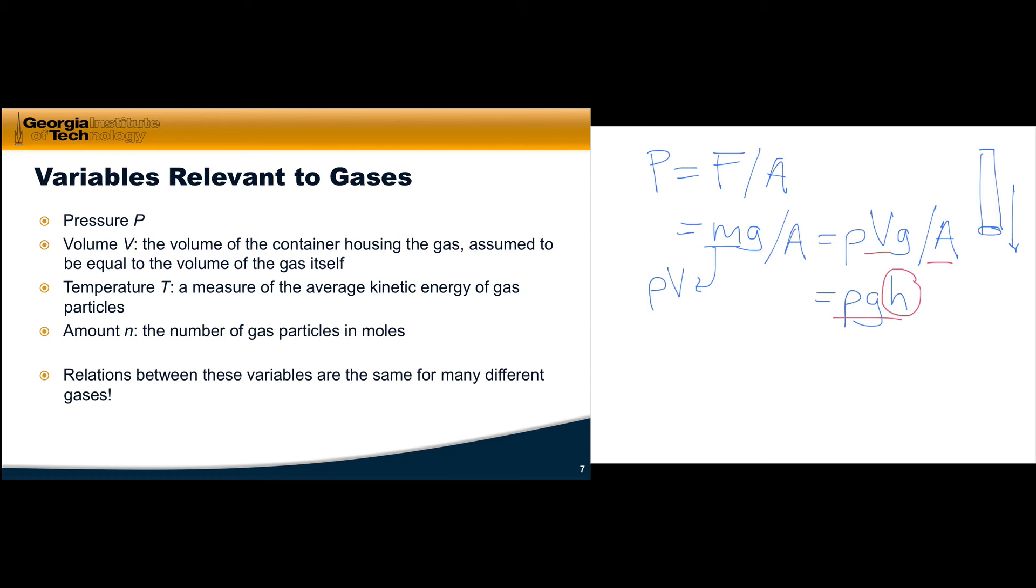Now that we've talked about pressure, I want to discuss variables relevant to gases and their particular quirks. Pressure we've already discussed. For a gas, the volume is equal to the volume of its container. A gas in a cube has a volume of the side length cubed. We can assume particles are spread uniformly throughout the container, so the container's volume equals the gas volume.